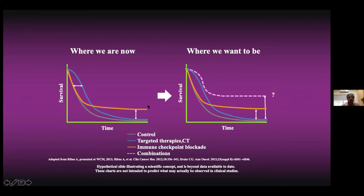What we are trying to achieve is to use combinations to produce the dotted line shown here — not only raising the tail of the curve upward, but continuing it further. This means increasing the number of patients benefiting, and continuing that parallel survival line with the combination we are exploring. That is what we are trying to achieve with immunotherapy today.